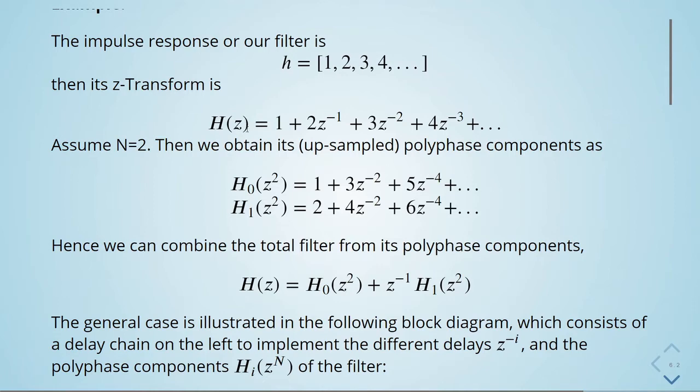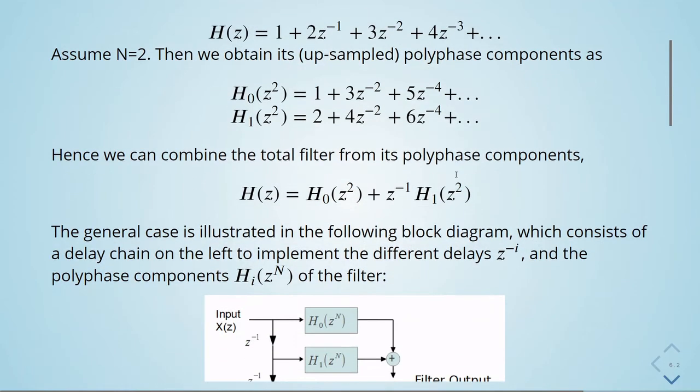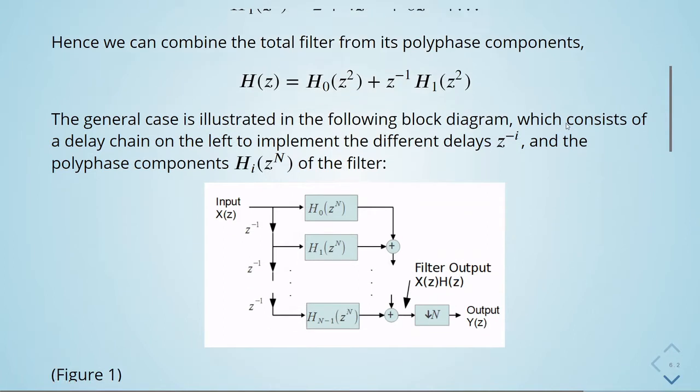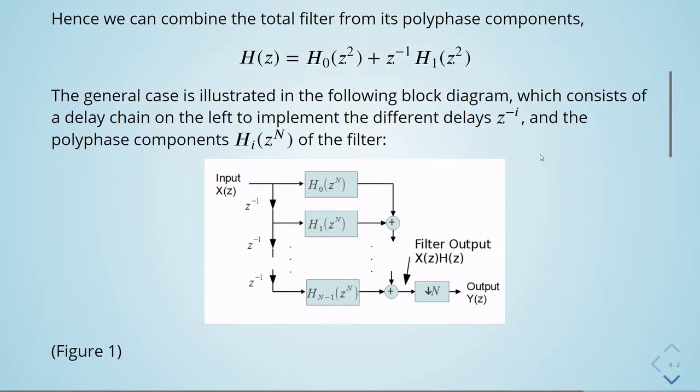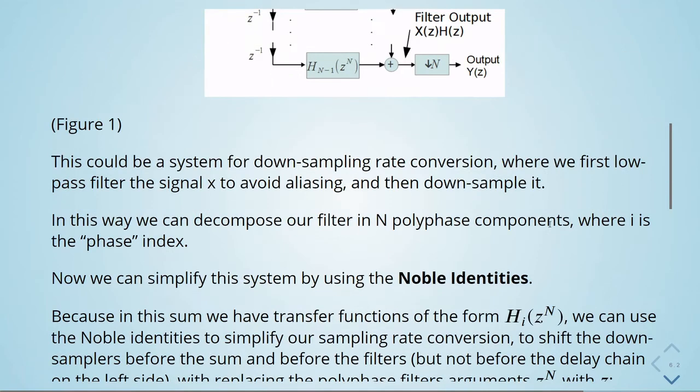The general case is illustrated in the following block diagram that consists of a delay chain on the left to implement the different delays z^(-i) and the polyphase components. Here we have the polyphase components, here we have our delays, here we have our input, this is the filter output, this is a down-sampling, and here we have our output.